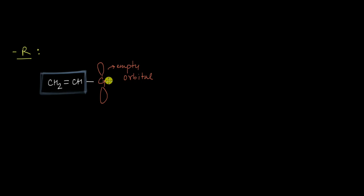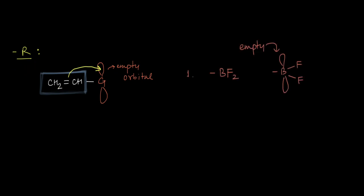We have seen that anything with an empty orbital can pull electrons from a surrounding pi system towards itself, decreasing the electron density of that system. This is what we call -R groups. So if we have something like BF2 attached to a pi system, this is going to act as a -R group.